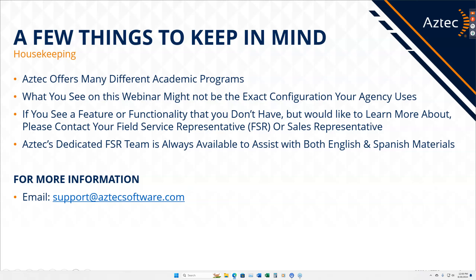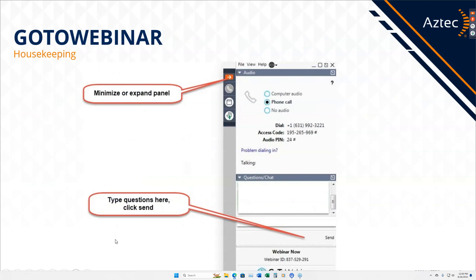I'm going to cover some housekeeping. If you see something that you're interested in, please reach out to our sales team at sales@aztecsoftware.com. If you know your field service representative's email address, you could certainly reach out to them. If you have questions and you're not sure who to reach out to, you can always go to support@aztecsoftware.com. We're going to pause along the way for questions. Chris Miller from Aztec Software is here with me. When we pause, she will feed me questions if they pertain to the whole group — put those into the question pod.